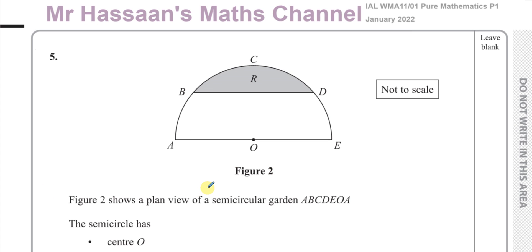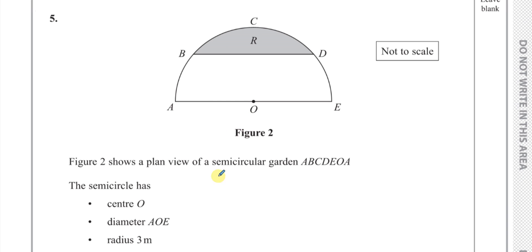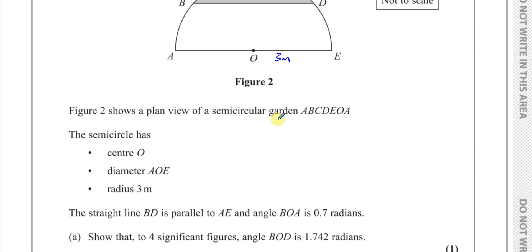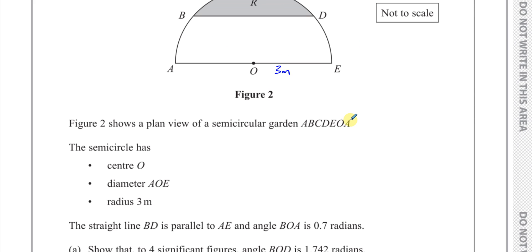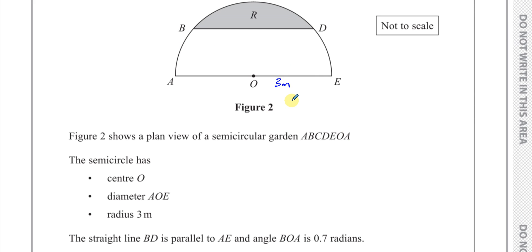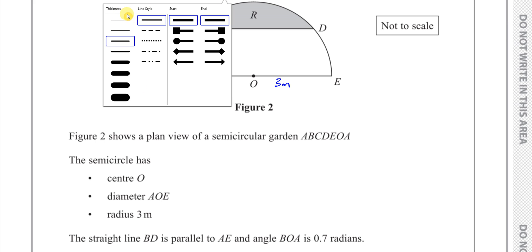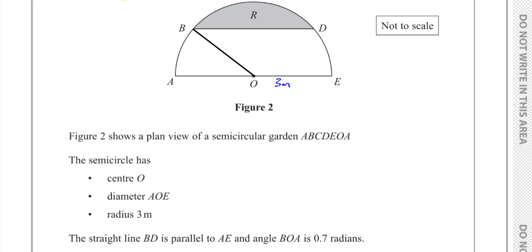Figure 2 shows a plan view of a semicircular garden ABCDE OA. The semicircle has a center O, a diameter AOE, and a radius of 3 meters. The straight line BD is parallel to AE and angle BOA is 0.7 radians — this angle here is 0.7 radians.